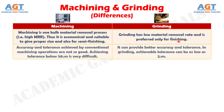Number 2: accuracy and tolerance achieved by conventional machining operations are not so good. Achieving tolerance below 50 micrometers is very difficult, whereas grinding can provide better accuracy and tolerance. In grinding, achievable tolerance can be as low as 2 micrometers.